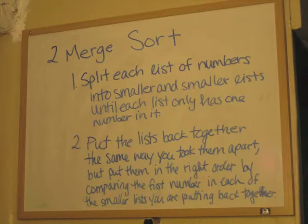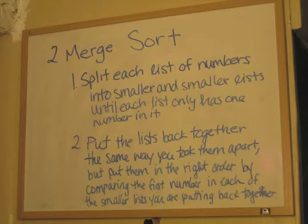This is the algorithm for Merge Sort. First, split each list of numbers into smaller and smaller lists until each list only has one number in it. Then, put the lists back together the same way you took them apart, but put them in the right order by comparing the first number in each of the smaller lists you are putting back together. This may not make a whole lot of sense now, but pay attention as we sort the list, and I think it will make more sense.